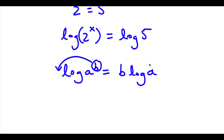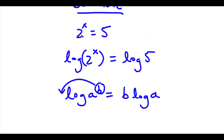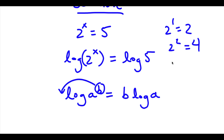And the reason why this property is so important is because we're trying to solve for x, and x is an exponent here. We know that x is going to be a decimal because you can't take 2 to the power of a whole number and make it equal 5. 2 to the power of 1 is equal to 2, 2 to the power of 2 is equal to 4, and 2 to the power of 3 is equal to 8. So the value of x is going to be somewhere in between 2 and 3.